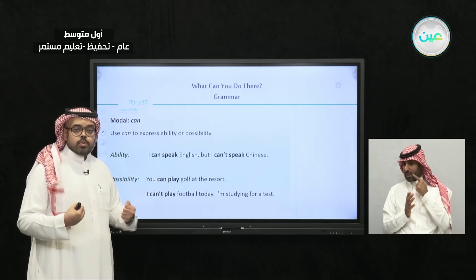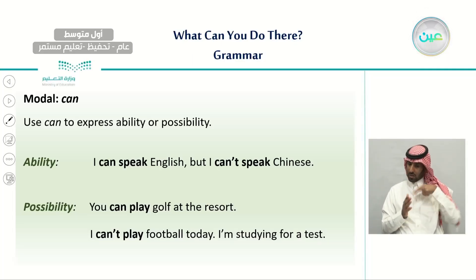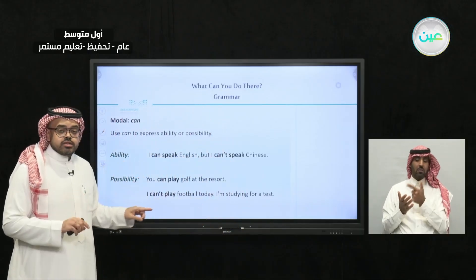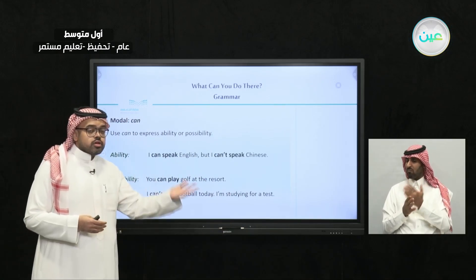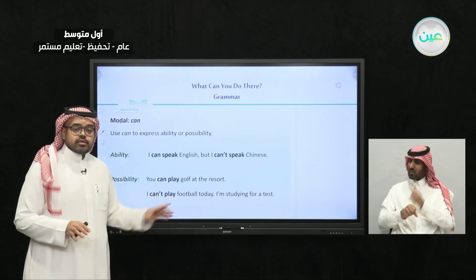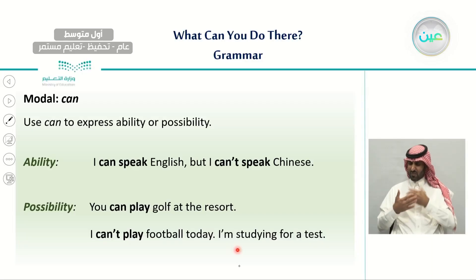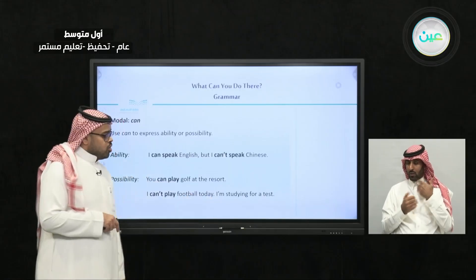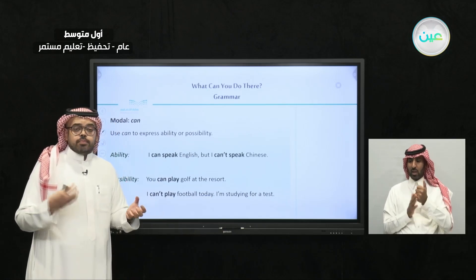Ability means you are capable and able to do something — I can speak English, I can walk, I can use a laptop. Possibility means it's not possible right now, not because you are unable, but because you have other things to do or the time is not right. For example: I can't play football today because I'm studying for a test.